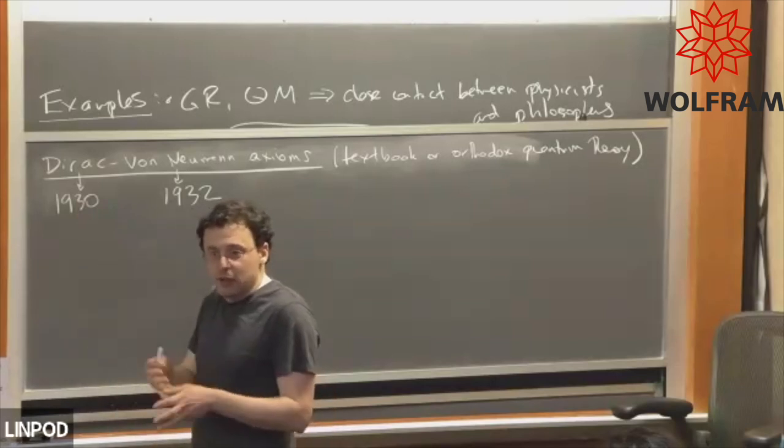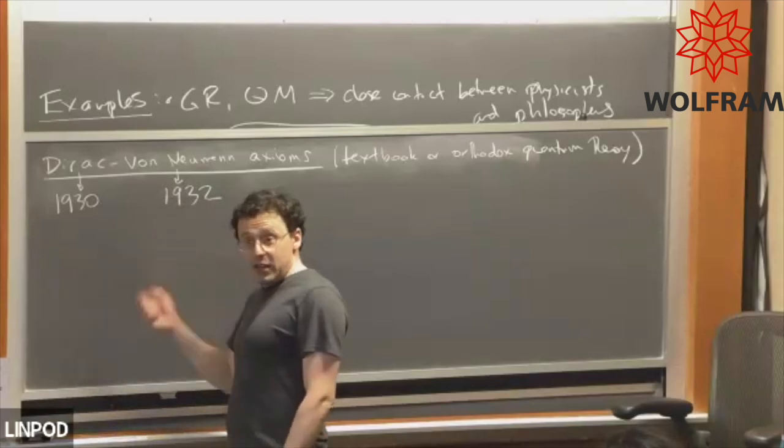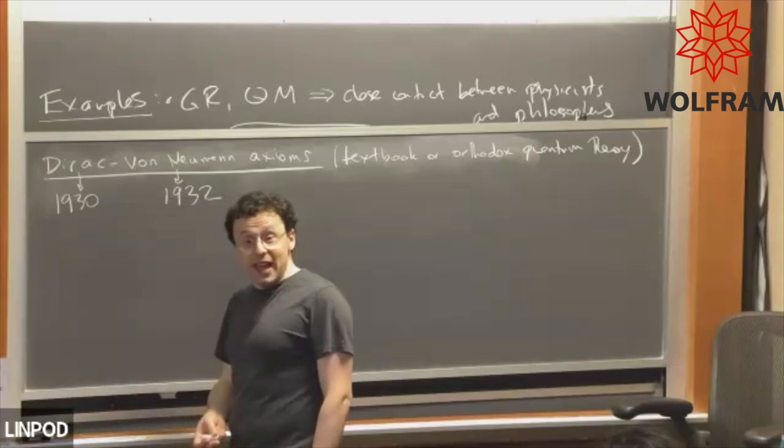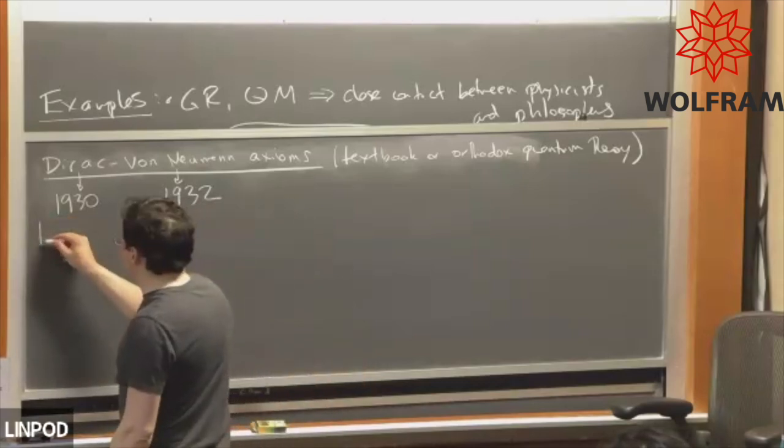Von Neumann, it's 1932 in Mathematical Foundations of Quantum Mechanics, although it was a German title and it's like Mathematische Grundlagen der Quantenmechanik, something like that. They formulated these axioms then. Here are the axioms. I want you to pay attention to what they say and what they do not say. So axiom one.